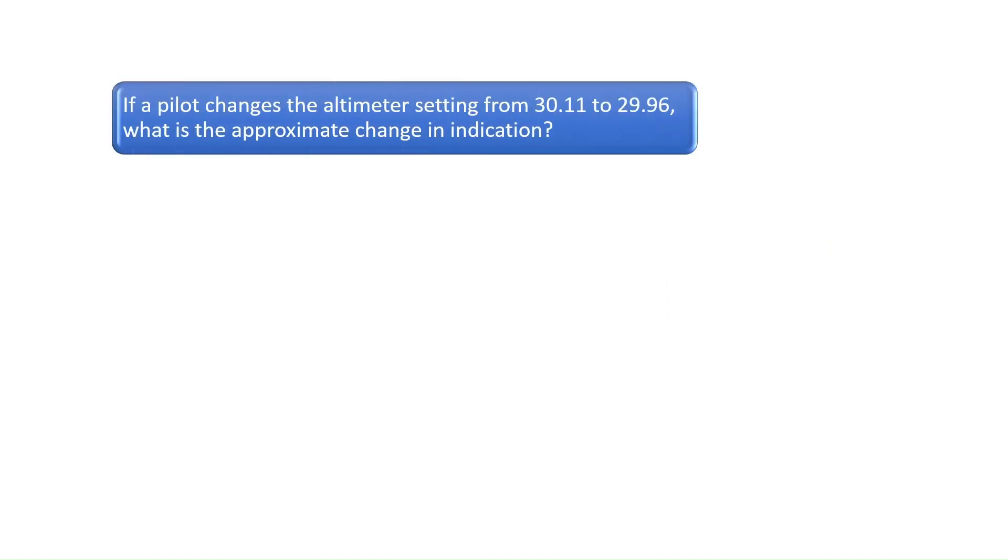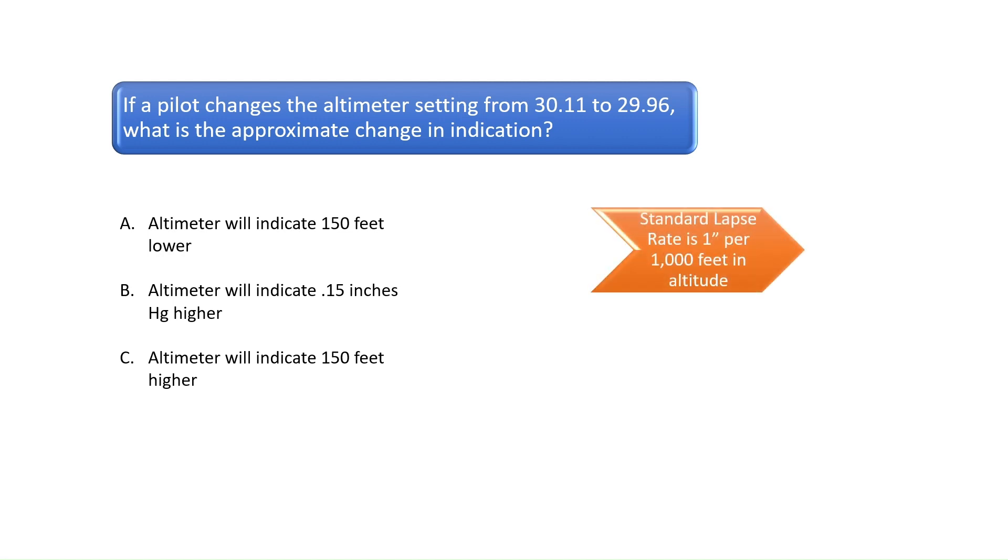Question 4. If a pilot changes the altimeter setting from 30.11 to 29.96, what is the approximate change in indication? The standard lapse rate is 1 inch of mercury per 1,000 feet of altitude. To solve this problem, subtract 29.96 from 30.11 to get 0.15. Then multiply 1,000 by 0.15 to get 150 feet.